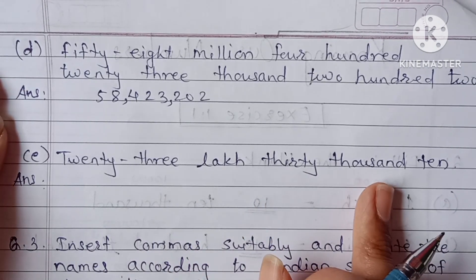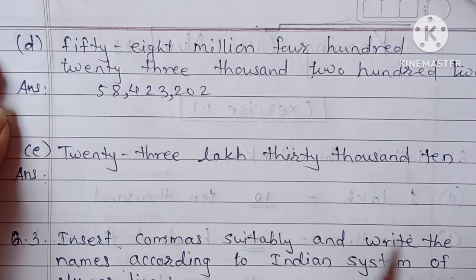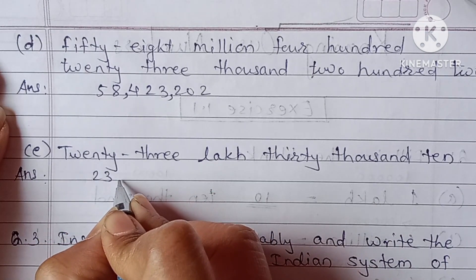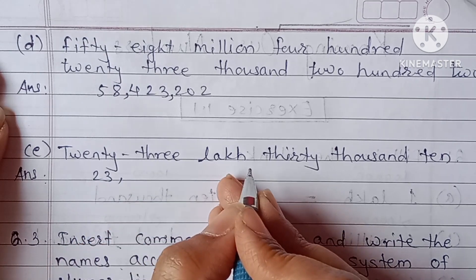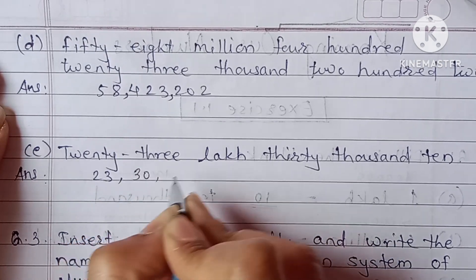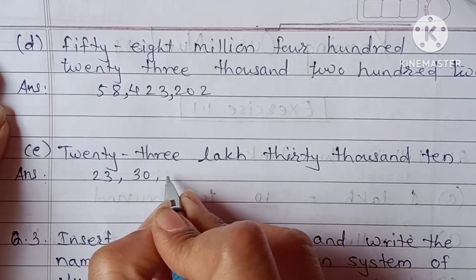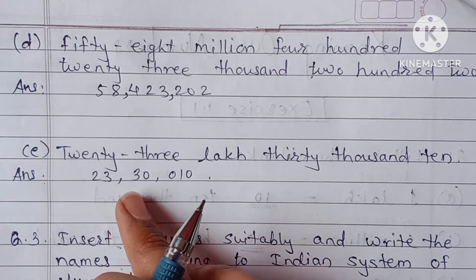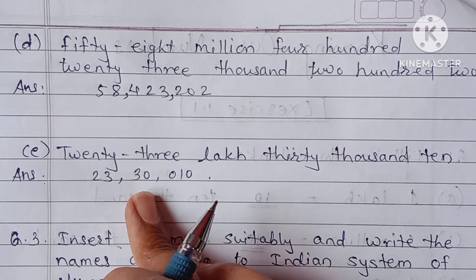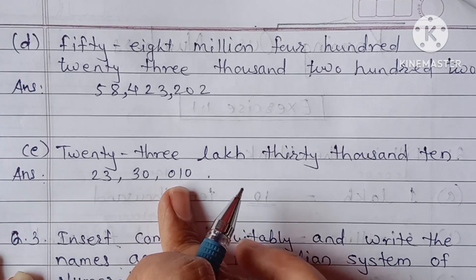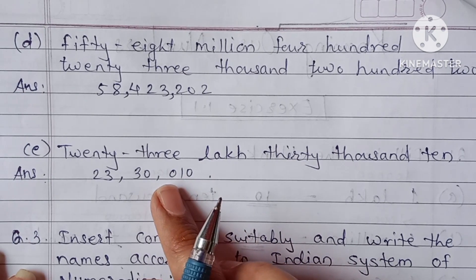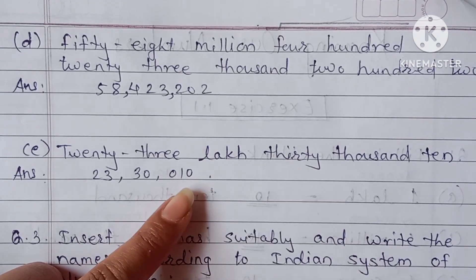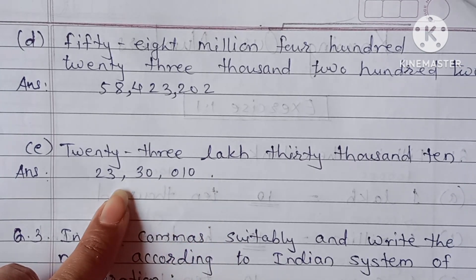23,000,000 plus 30,000 plus 10. In the Indian system after three digits then 2-digit commas. For the international system after every three digits you give the comma. So the number is 23,030,010.